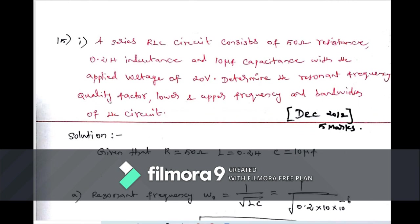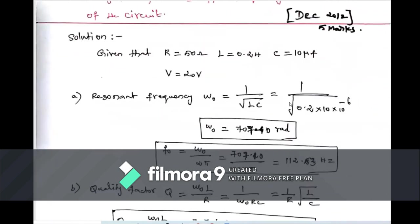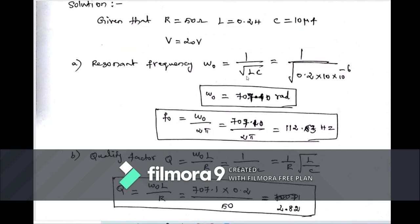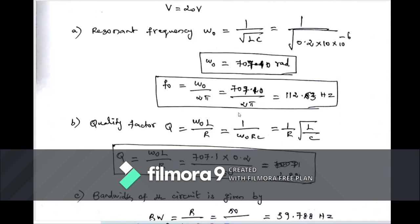Given data: R = 50 Ω, L = 0.2 H, C = 100 μF = 100×10⁻⁶ F, V = 20 V. Calculate resonant frequency: ω₀ = 1/√(LC) = 1/√(0.2 × 100×10⁻⁶) = 707.1 rad/s. In hertz: f₀ = ω₀/(2π) = 112.53 Hz.